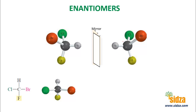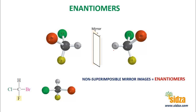If you take the mirror image of this compound and try to superimpose it on the original, it will not be possible to superimpose it completely. If you take the carbon, it will be on the carbon, but hydrogen will superimpose with the bromine. So these two molecules are non-superimposable. A molecule which is non-superimposable on its mirror image is called an enantiomer. So enantiomers are non-superimposable mirror images.